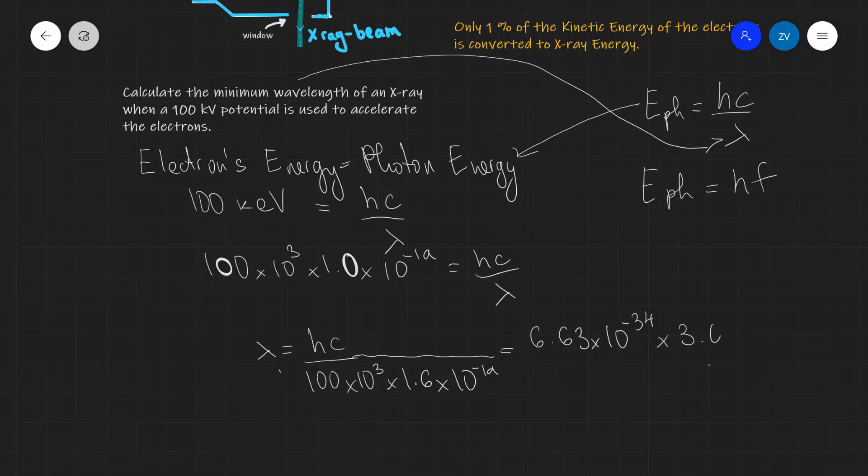C is 3.0 times 10 to the 8. I'm going to be dividing that by 100 times 10 to the power of 3 times 1.6 times 10 to the power of minus 19. Now, if I was to plug this into a calculator, what I'm going to get is about 1.24 times 10 to the power of minus 11.